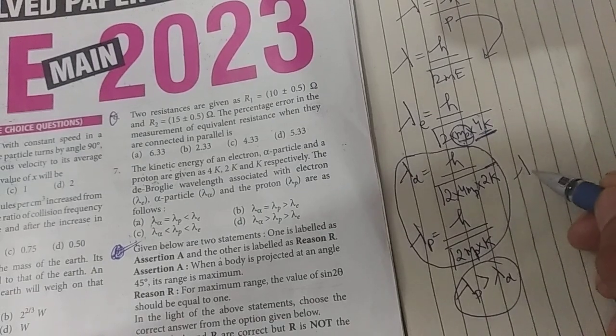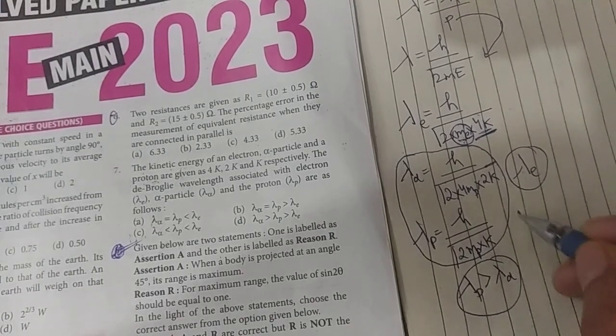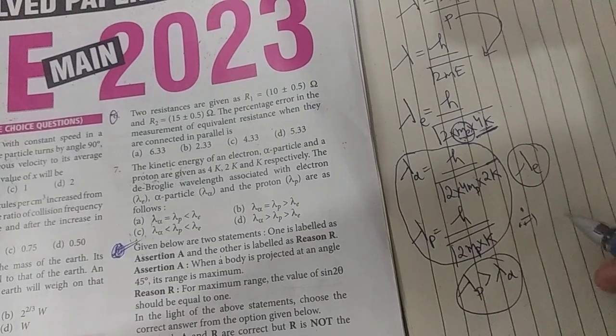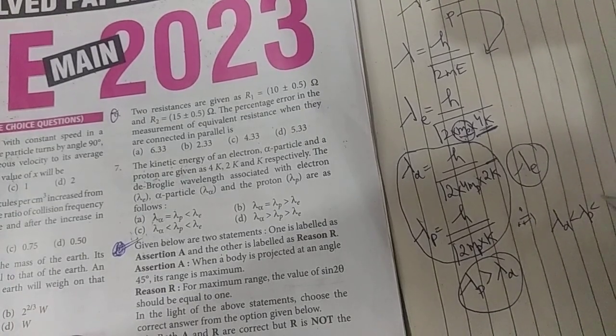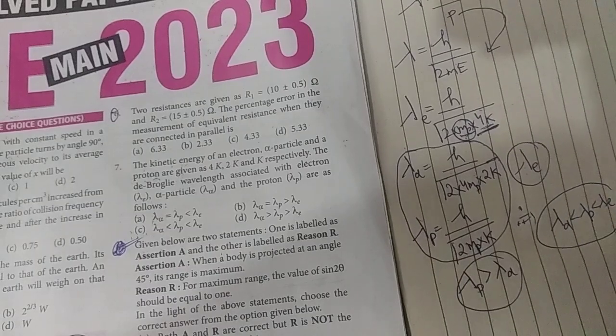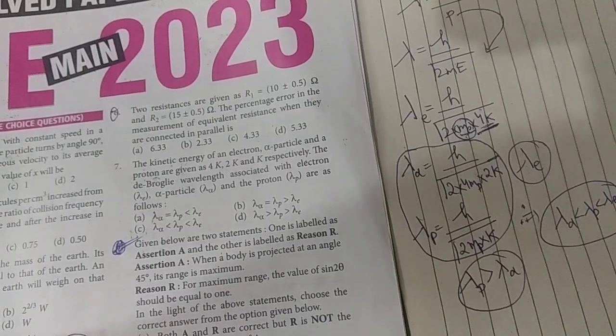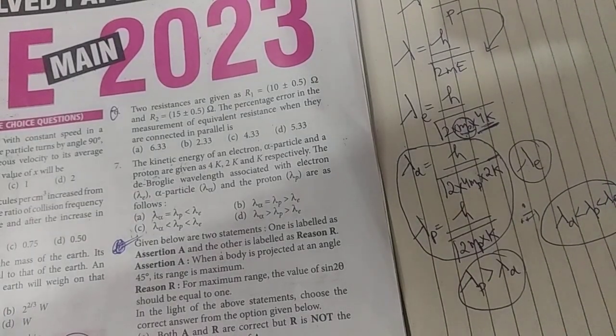It means that lambda of electron is the highest and you can see the answer: lambda of alpha is less than lambda of proton which is less than lambda of electron. So the highest de Broglie wavelength is for electron. So option C is the correct answer. Thank you.